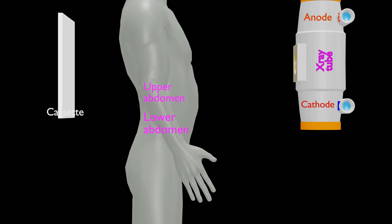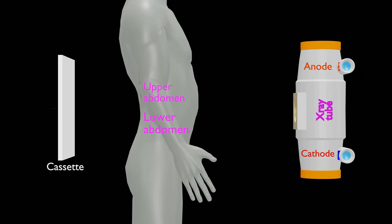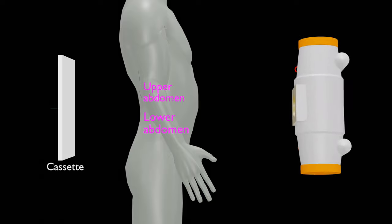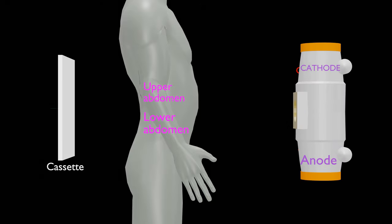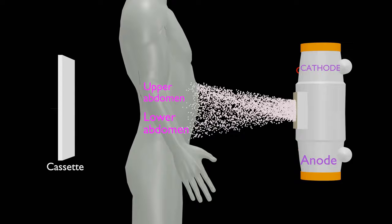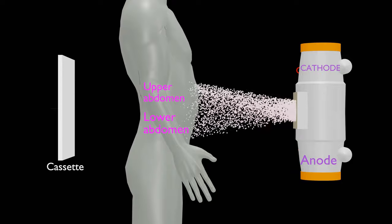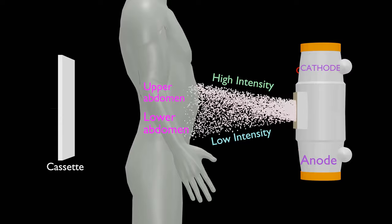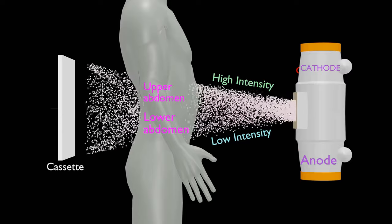In the abdomen, anatomy is thicker towards upper abdomen and thinner at lower abdomen or pelvic area. So, we need to keep cathode of x-ray tube superiorly. By doing so, thicker upper abdomen will receive higher intensity of x-rays, and due to higher thickness, upper abdomen will attenuate more comparison to lower abdomen.